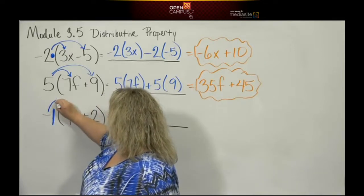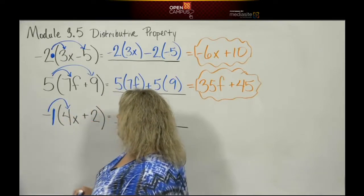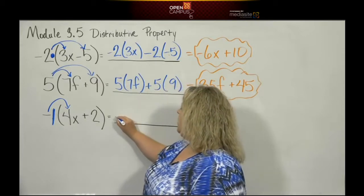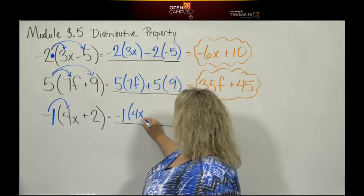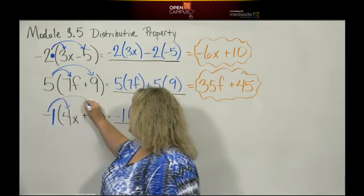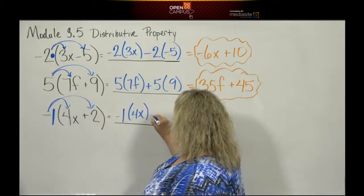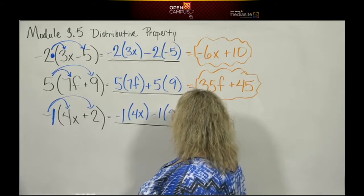We're going to take our negative 1, our understood spirit negative 1, and we're going to multiply that by the 4x. And then we're going to take our little spirit 1, negative 1, and we're going to multiply him to the positive 2.